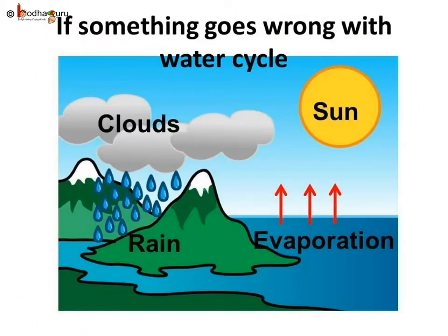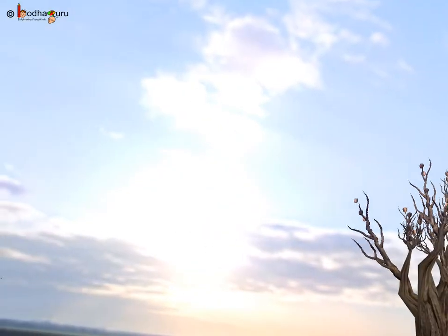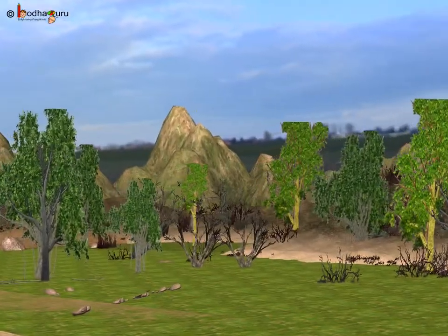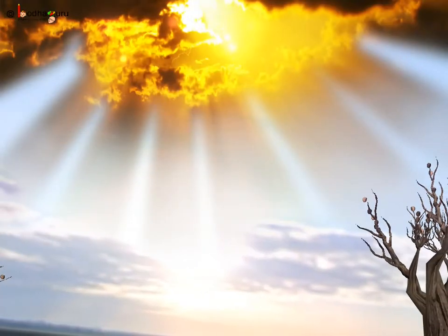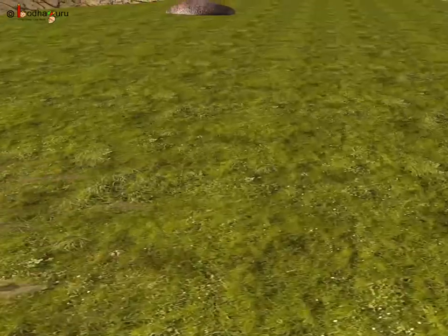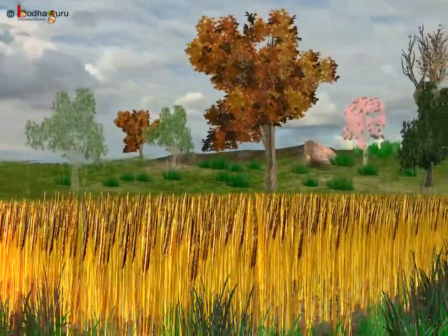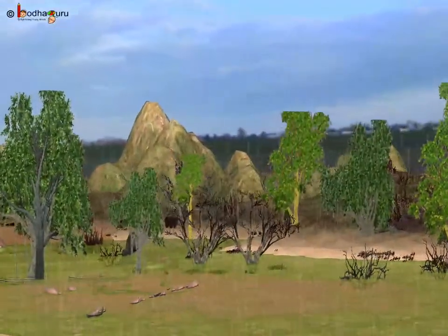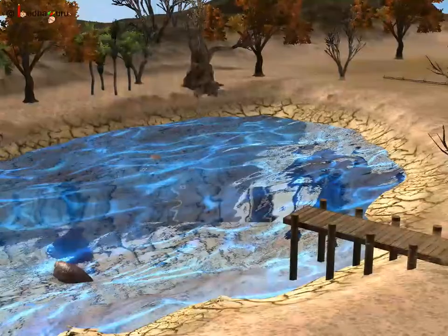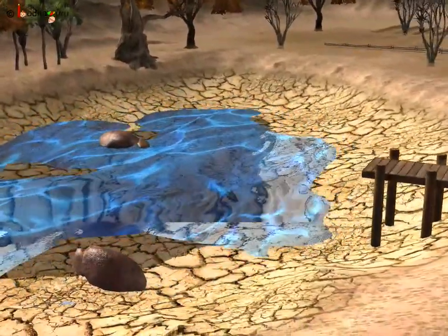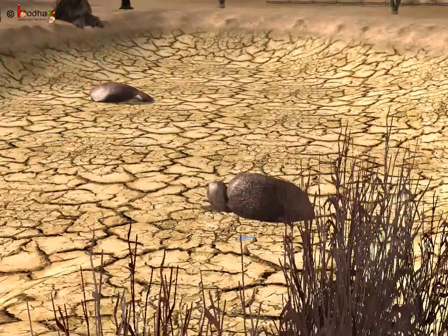Now we can assume there would be bad consequences if something goes wrong with this water cycle, as the water cycle supplies us with water. In India, farmers mostly depend on rainwater for agriculture. After the dry summer season, the monsoon season brings rain for the farmers. But some years rain may not come or it may come late — and we all know what happens then. Yes, there is a shortage of water.